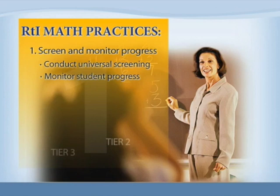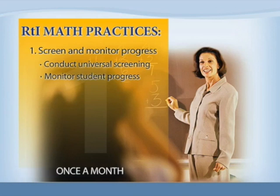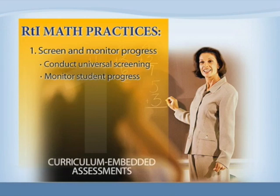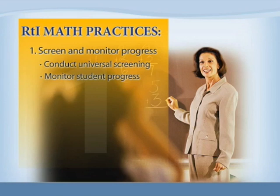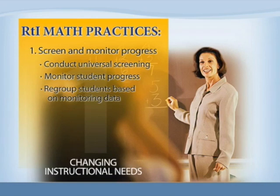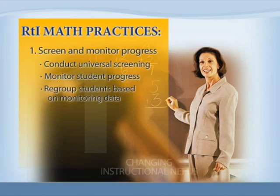Regular progress monitoring is used in Tier 2, Tier 3, and in Tier 1 for borderline students. Monitoring should be conducted at least once a month using grade-appropriate general outcome measures. In addition, curriculum-embedded assessments can provide helpful information about student learning. Progress monitoring provides teachers with valuable information for regrouping students, which helps respond to students' changing instructional needs and prevents them from stagnating in an intervention that is not working.